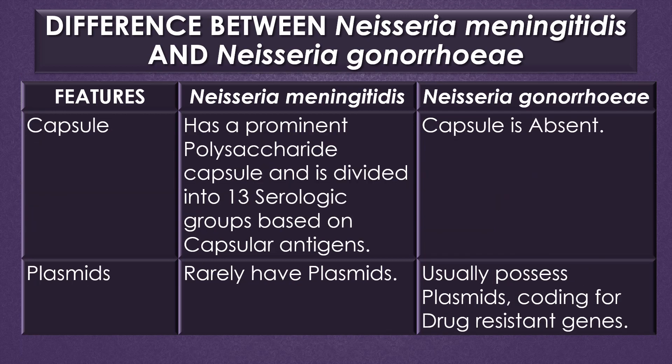Regarding capsules, meningococci has a predominant polysaccharide capsule and is divided into 13 serological groups based on the capsular antigens. In Neisseria gonorrhoeae, or gonococci, the capsule is absent.